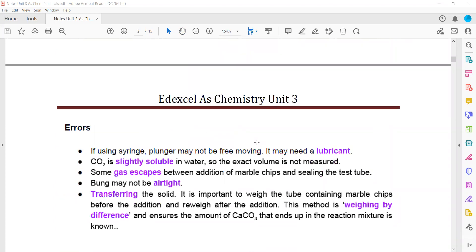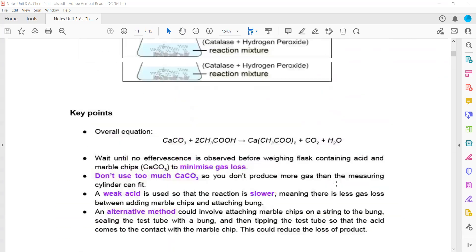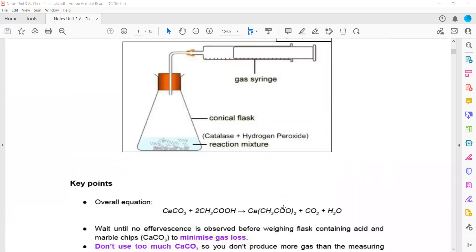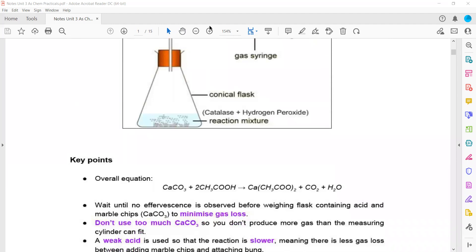When transferring the solid, it's important to weigh the tube containing marble chips before addition and reweigh after. This method of weighing by difference ensures the amount of CaCO₃ in the reaction mixture is known. We need to know the mass before and after—taking the difference gives how much reacted. From that mass, we calculate moles of CaCO₃ and then moles of CO₂.